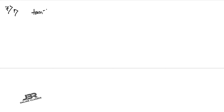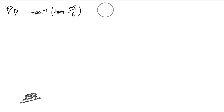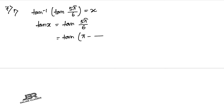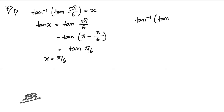Sum number 7.1: Show that tan⁻¹(tan(5π/6)) ≠ 5π/6. Let tan⁻¹(tan(5π/6)) = x, so tan x = tan(5π/6). Writing 5π/6 = π − π/6 and using tan(π − θ) = −tan(θ), we get tan(π/6). Therefore x = π/6, not 5π/6.